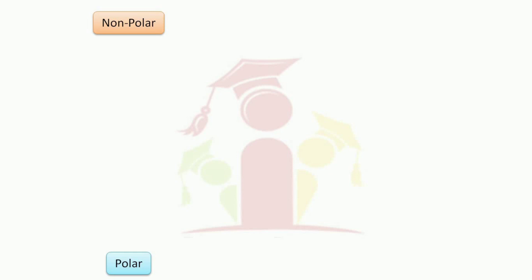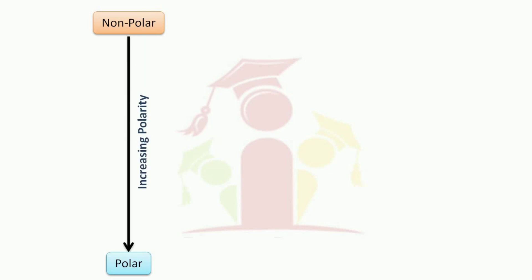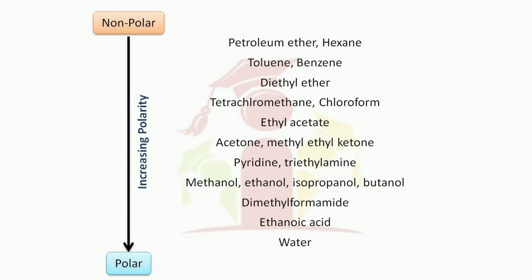The polarity index of some solvents is given from nonpolar to polar. In increasing polarity, we have petroleum ether and hexane being the nonpolar ones and water being the most polar. In between, we have toluene, benzene, diethyl ether, tetrachloromethane, chloroform, ethyl acetate, acetone, ethyl methyl ketone, pyridine, triethylamine, methanol, ethanol, isopropanol, butanol, dimethylformamide, ethanoic acid, and finally the most polar — water.